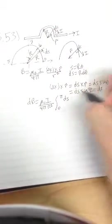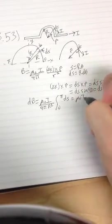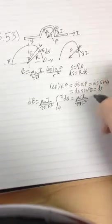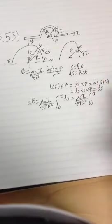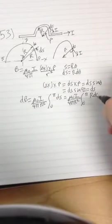So that's ds, which equals mu naught i over 4 pi r squared, 0 to pi, r d theta.